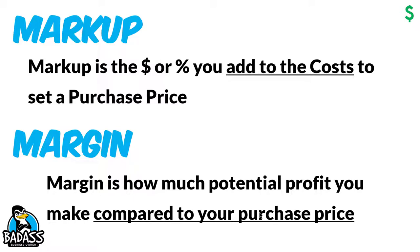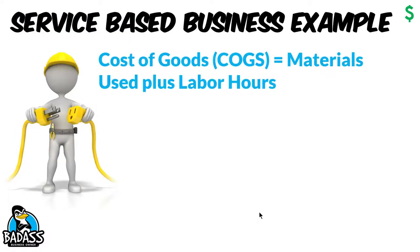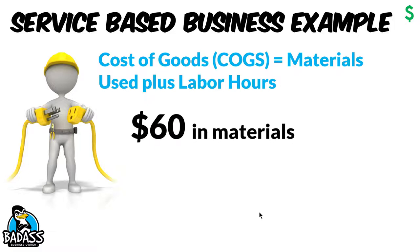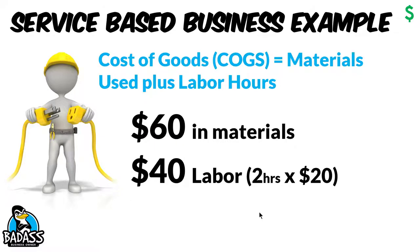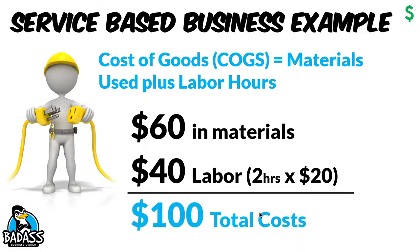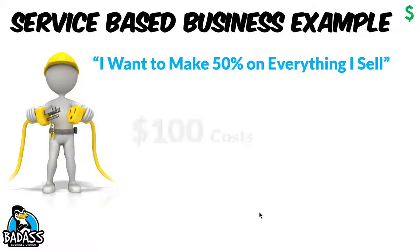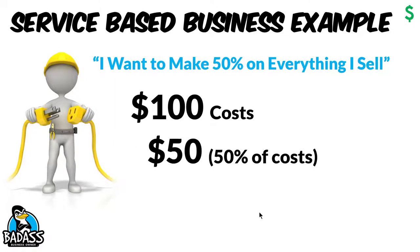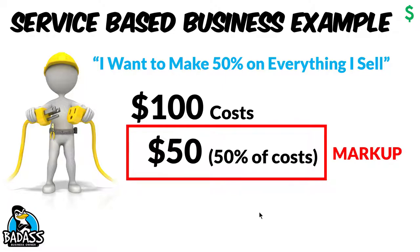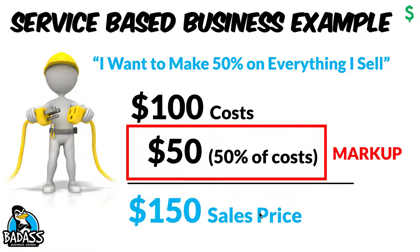Let's take a look using some examples. Let's say you have a service — your cost of goods sold, otherwise known as COGS, includes any material costs plus any labor hours spent to provide the service. For example, if you have $60 in materials and two hours of labor at $20 an hour — that's $40 — you would have $100 in costs. Now let's say you want to make 50% on everything you sell, so you take your $100 and add $50 on top to determine your sales price. That's the markup, so your sales price is going to be $150.